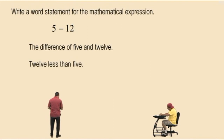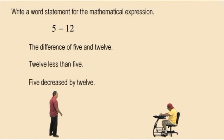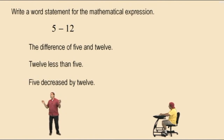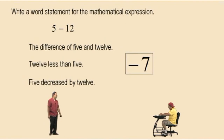We could also say 5 decreased by how much, Charlie? 12. What is 5 decreased by 12, Charlie? Negative 7. Notice: 12 subtract 5 is 7, and therefore by Kung Fu, 5 subtract 12 is negative 7.